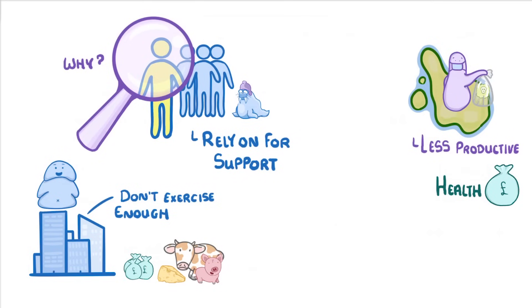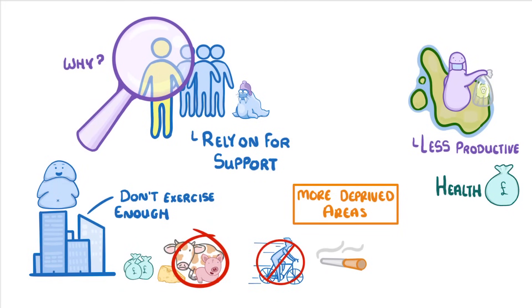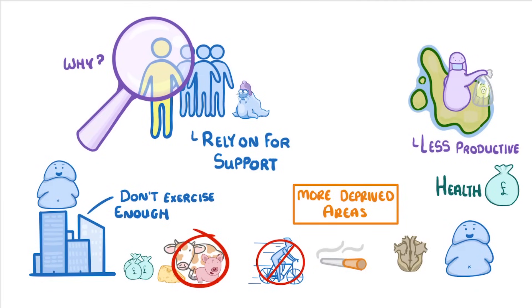Meanwhile, on a national scale within the UK, people from more deprived areas are more likely to smoke, have a poor diet, and not exercise enough. So we see more cases of cardiovascular disease and obesity in those deprived areas.